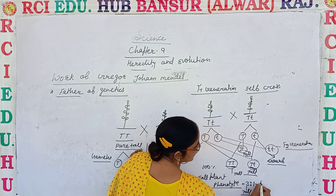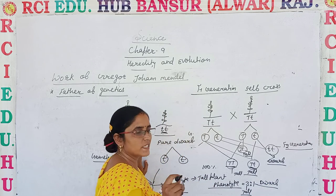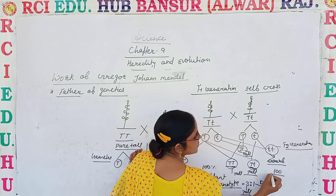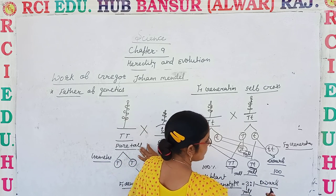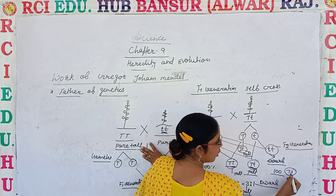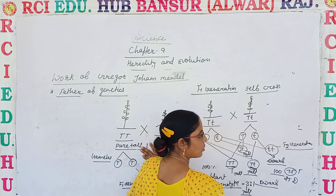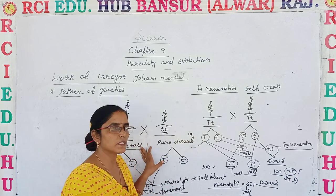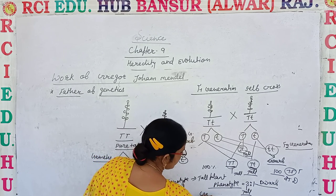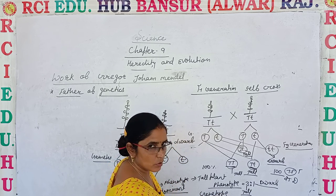So in the F2 generation, three plants are tall and one plant is dwarf. For example, if there are 100 total F2 progeny, 75 plants are tall and 25 are dwarf. This 3:1 ratio is the phenotype ratio. If we talk about genotype, we have pure capital T capital T, heterozygous capital T small t, and pure dwarf small t small t.